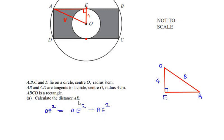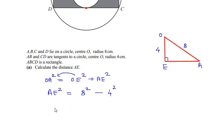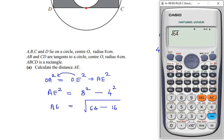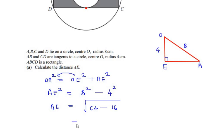We make AE the subject: AE squared = OA squared minus OE squared = 8 squared minus 4 squared = 64 minus 16 = 48. So AE = square root of 48 = 6.928, which we round to 6.93 centimeters to 3 significant figures.